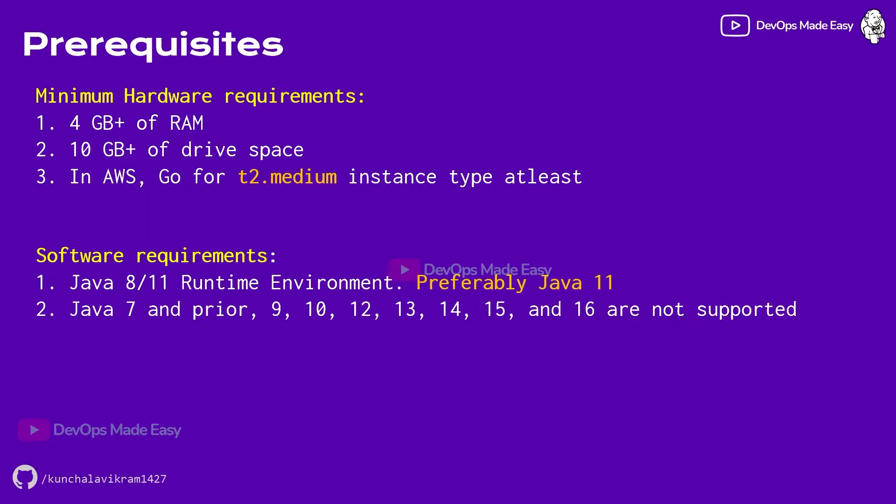There are certain prerequisites for running Jenkins. The first one is we need at least 4 GB of RAM and 10 GB of drive space, though 8 GB of drive space is also acceptable. If you are planning to install Jenkins on AWS EC2 instances, you have to go for at least a t2.medium instance type. For software requirements, we need Java 8 or 11 as the runtime environment, preferably Java 11 for all the latest installations of Jenkins. Java 7 and versions 9, 10, 12, 13, 14, 15, and 16 are not supported.